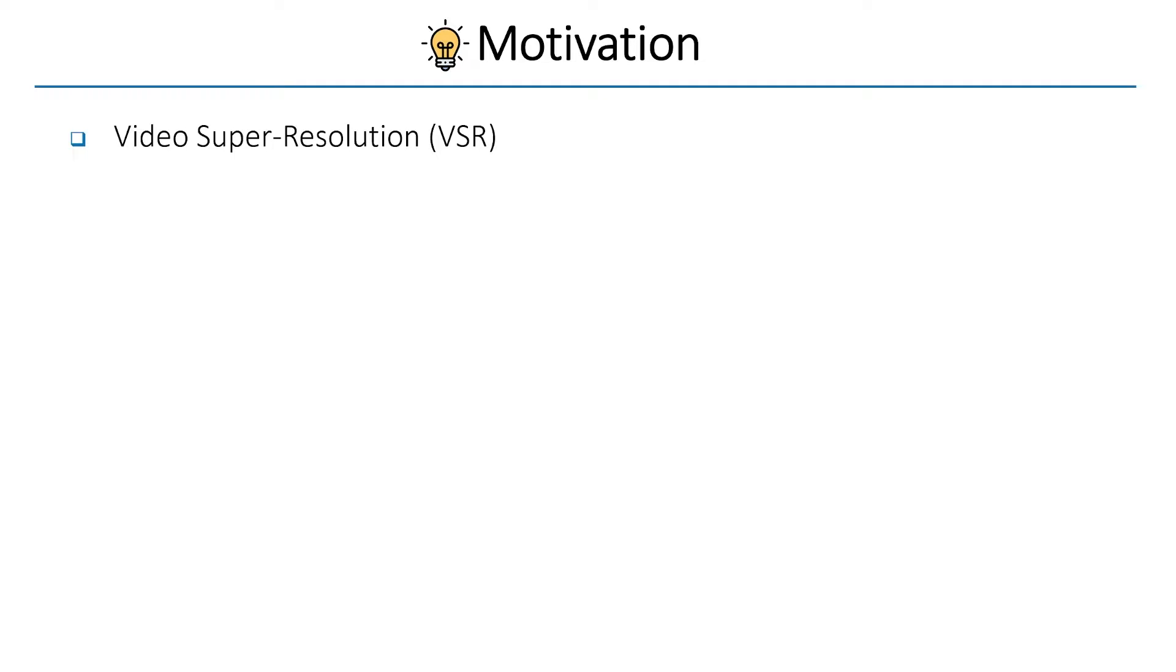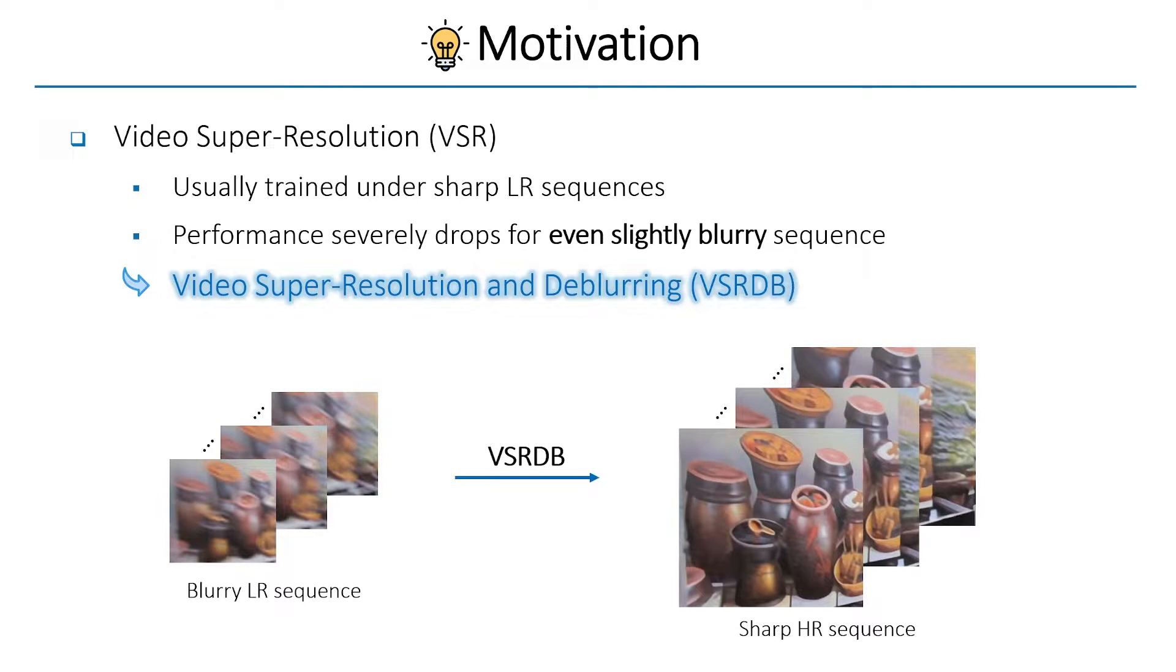Video Super-Resolution Networks are usually trained with sharp low-resolution sequences, and thus their performances tend to severely drop for even slightly blurry frames. Therefore, there is a need for joint video super-resolution and de-blurring, which aims to handle more common degradation scenarios than video super-resolution alone.